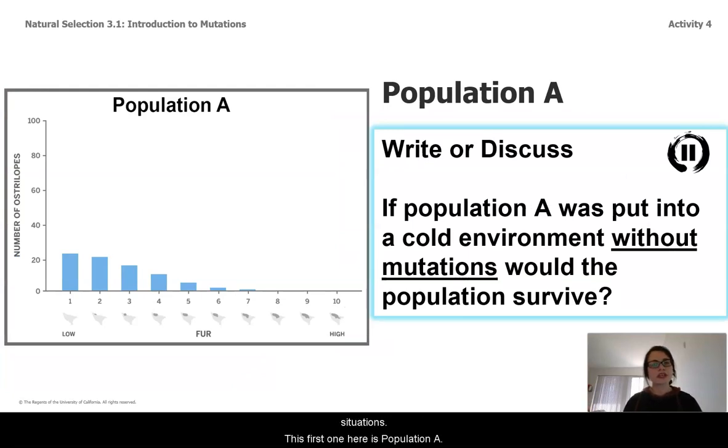This first one here is population A. Let's say population A is put into a cold environment, but they're not able to mutate. Do you think that they would survive? Go ahead, pause, write, and discuss on that.